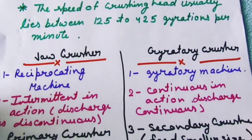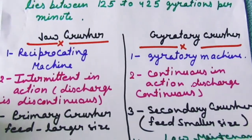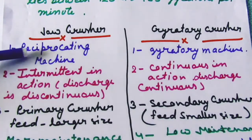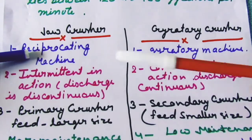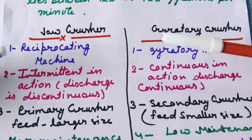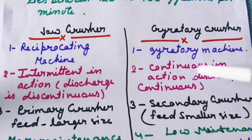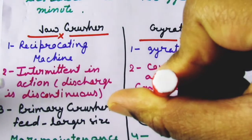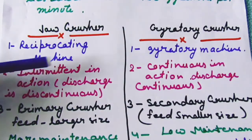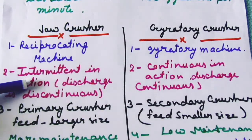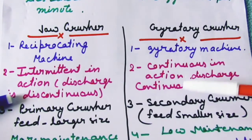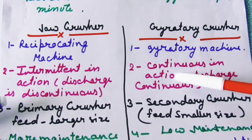Now, comparing the jaw crusher and the gyratory crusher: the jaw crusher is a reciprocating machine, while the gyratory crusher has gyratory motion. The jaw crusher has intermittent action — the discharge is discontinuous. The gyratory crusher discharges continuously.